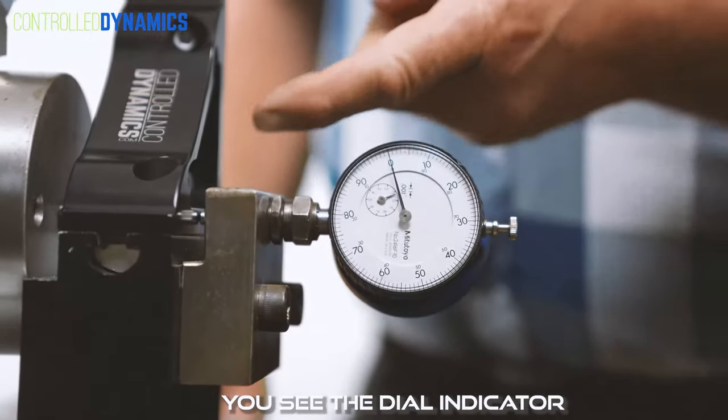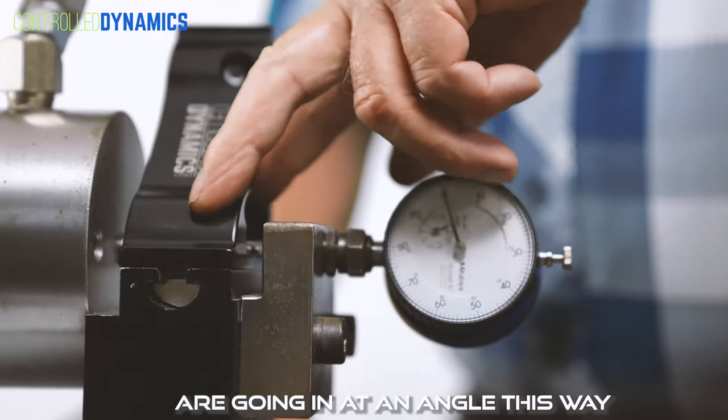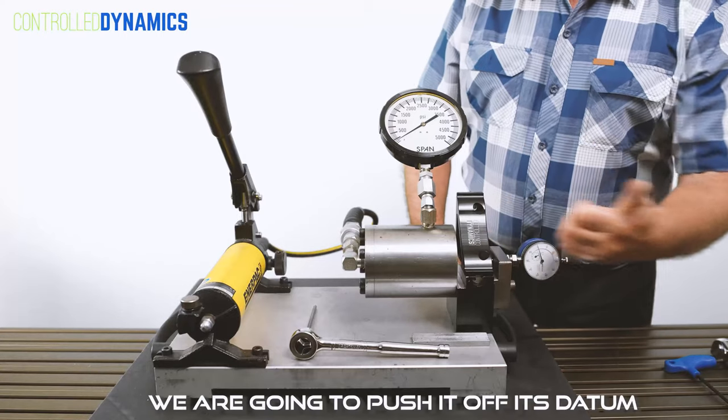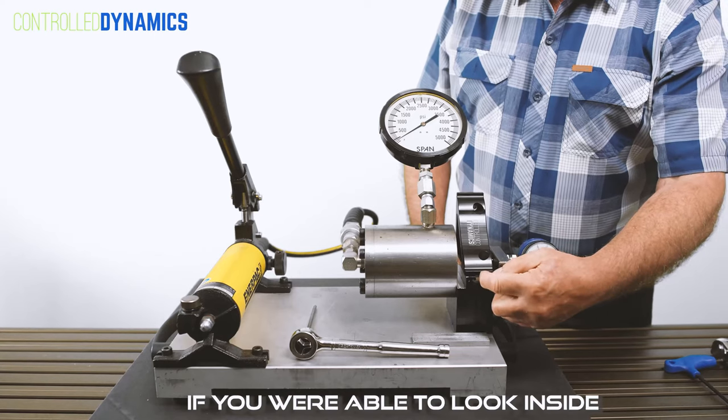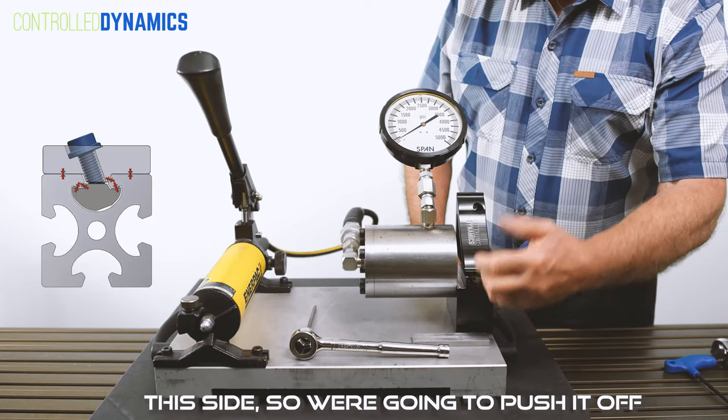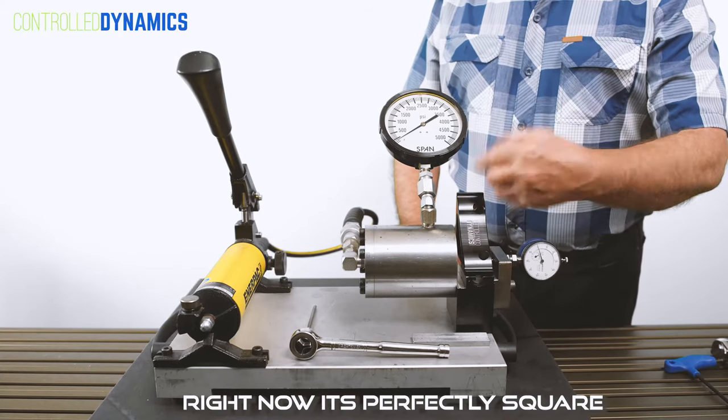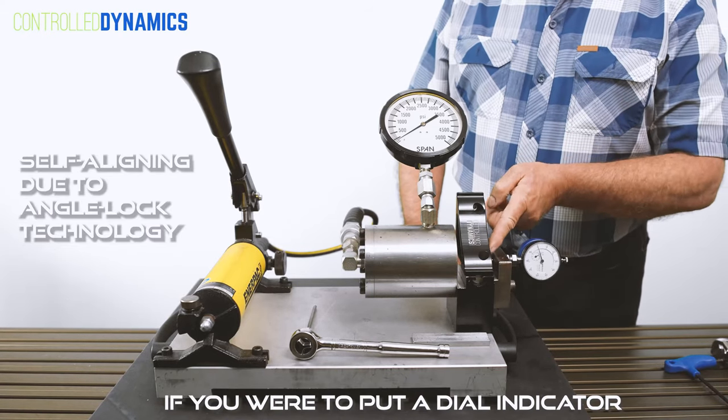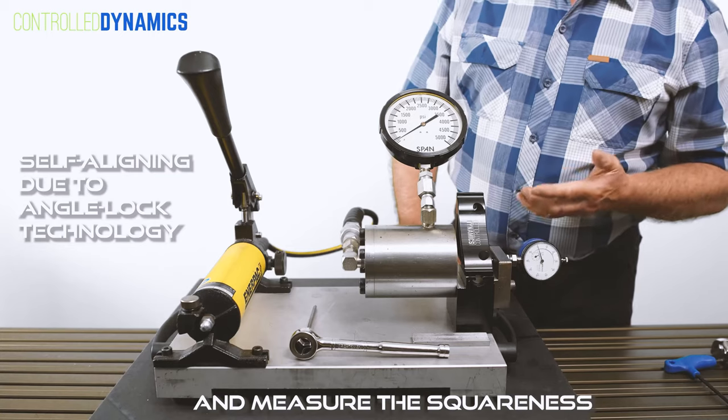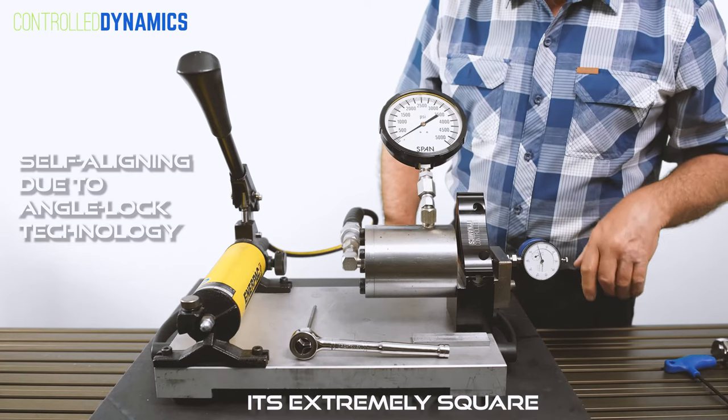You see the dial indicator is up against - the bolts are going in at an angle this way. We're going to push it off its datum. If you were to look inside, you would see there's clearance on this side. Right now it's perfectly square. If you were to put a dial indicator on here and measure the squareness of this thing, it's extremely square.